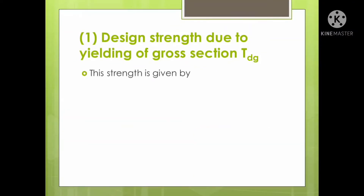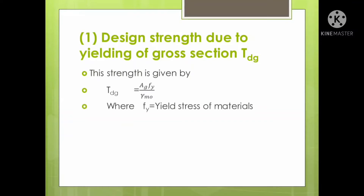The design strength TDG is given by the equation: TDG = AG × FY / γMO. FY is the yield stress of the material, and since this is mild steel, FY is usually 250 Newton per mm square.